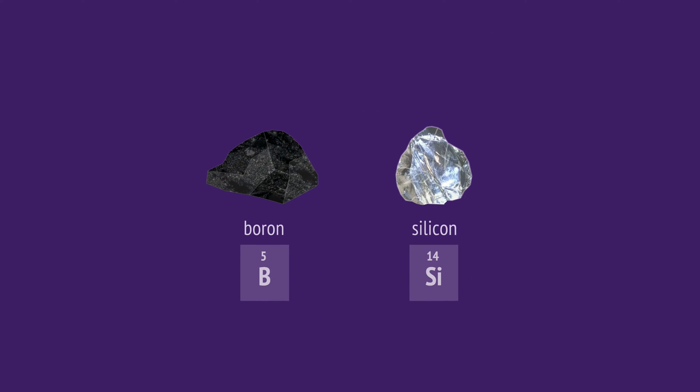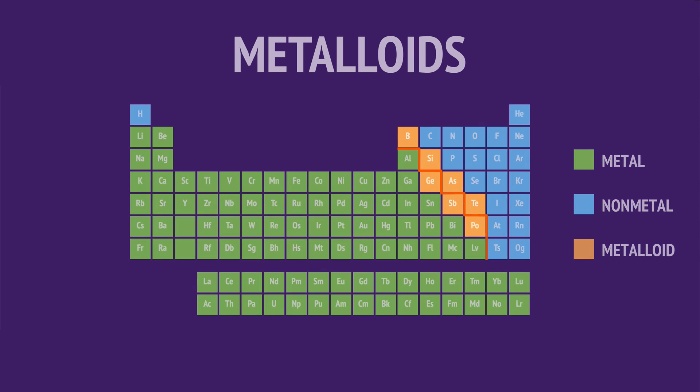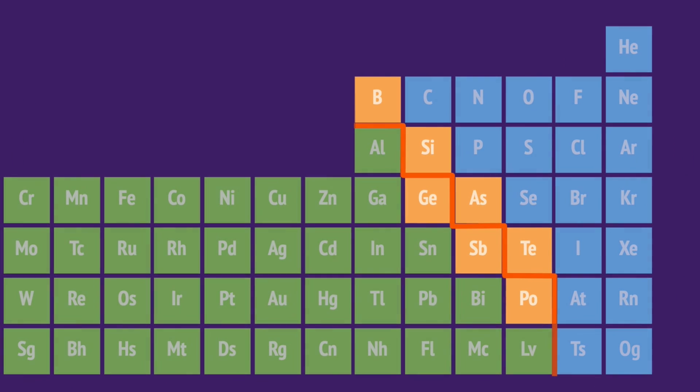Some elements, like boron and silicon, have properties of both metals and nonmetals. We call these metalloids or semi-metals. Metalloids sit between the metals and nonmetals in the periodic table, following a staggered line called the metalloid staircase.